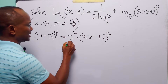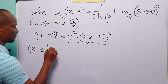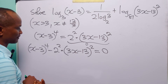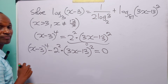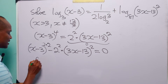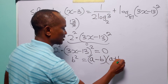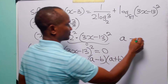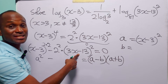Now, to solve this equation, let us move this term over to the left-hand side. When we do that, we have x minus 3 to the power 4 minus 2 squared times 3x minus 13 squared, equal to 0. When you look at this left-hand side, you see the difference of two squares, because 4 can be written as 2 times 2. Using a squared minus b squared equals (a minus b)(a plus b), where a is x minus 3 squared and b is 2 times 3x minus 13.